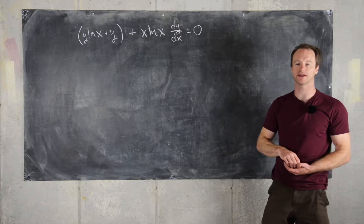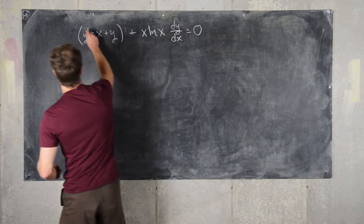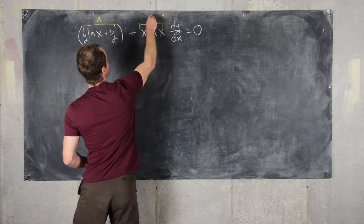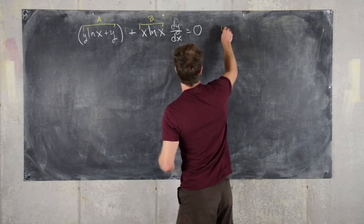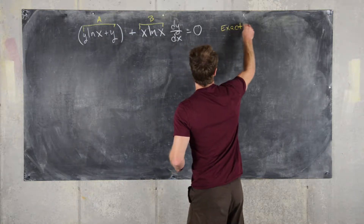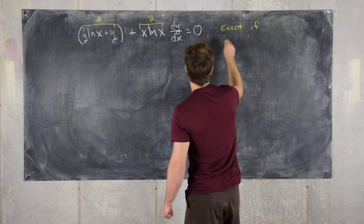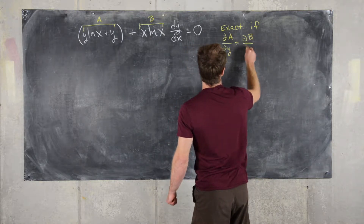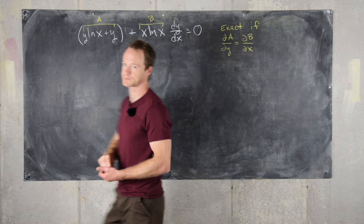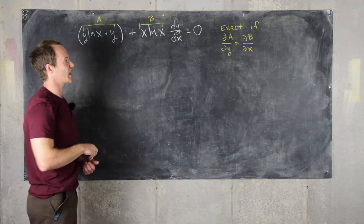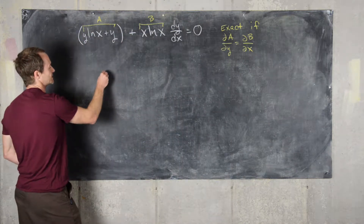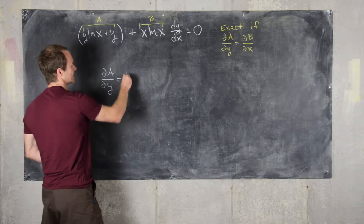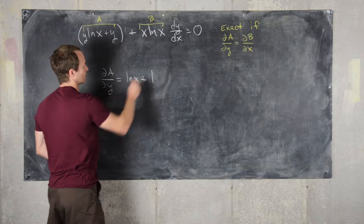Let's recall what an exact differential equation is. If we set this equal to a function A and this equal to a function B, then this is exact if the partial of A with respect to Y equals the partial of B with respect to X. Let's go ahead and check: the partial of A with respect to Y gives us the natural log of X plus 1.